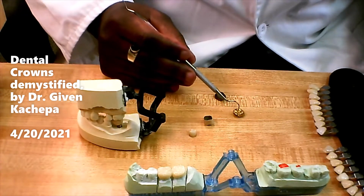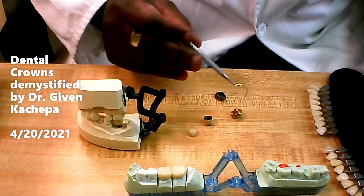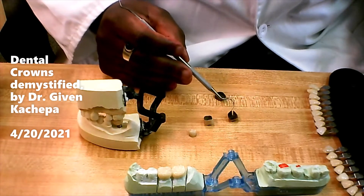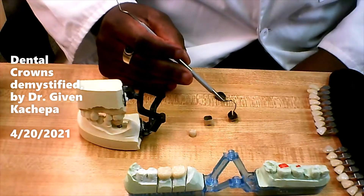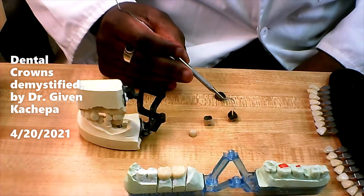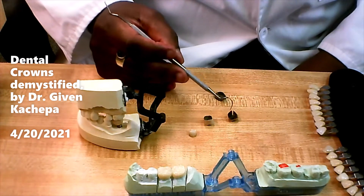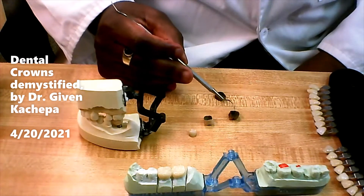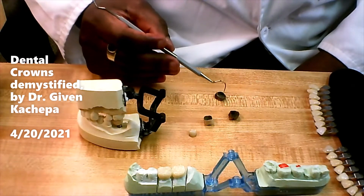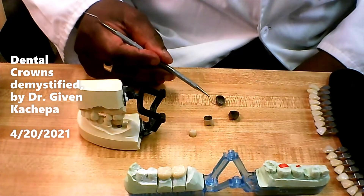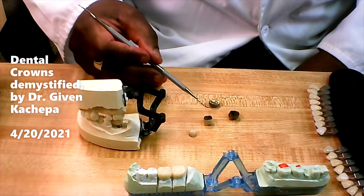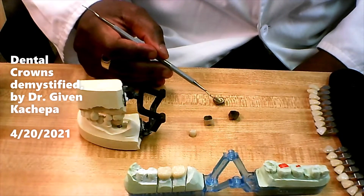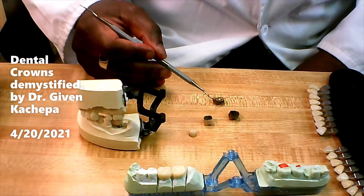I have a gold crown here — this is a cast metal. We used to use these a long time ago and we still use them today. They're very good for back teeth; they're very strong and last a very, very long time. Here I have another cast metal crown, and we also use these in the back of the mouth.